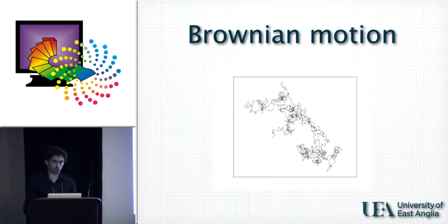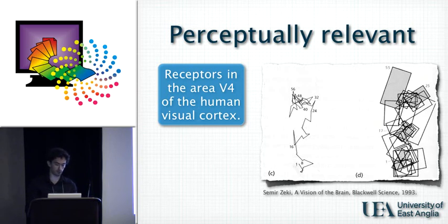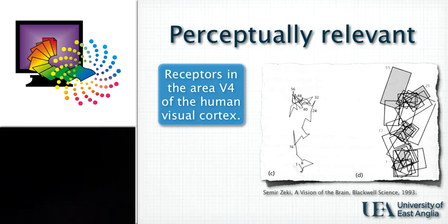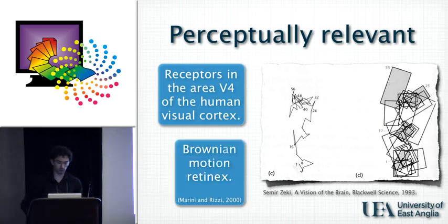So what does this have to do with image enhancement? Well, it's somehow perceptually relevant. If you look at the figure on the right, that kind of path represents the position of certain receptors in the area before of our visual cortex. And this was the inspiration from nature that drove the design of a retinex version based on Brownian motion.